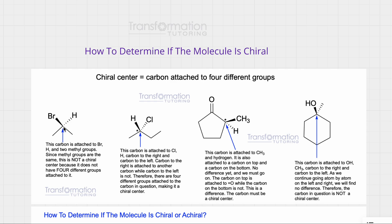This carbon is attached to a bromine, a hydrogen, and it's attached to a methyl group on the left and a methyl group on the right. Is this a chiral center? No, because it does not have four different groups. So this carbon is not a chiral center.